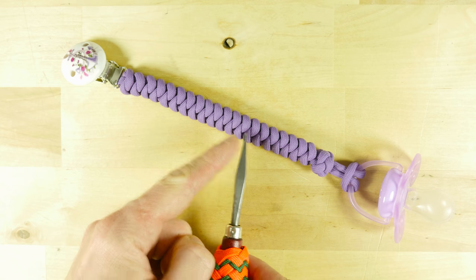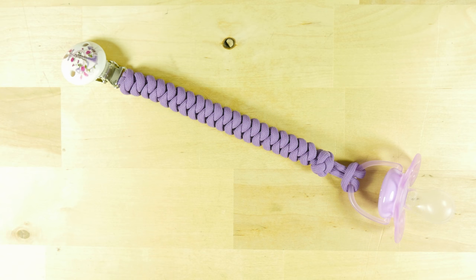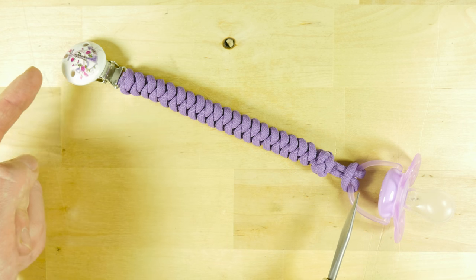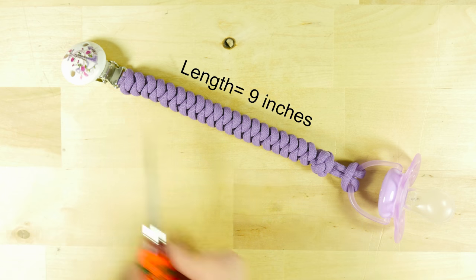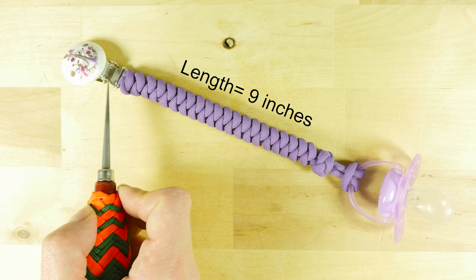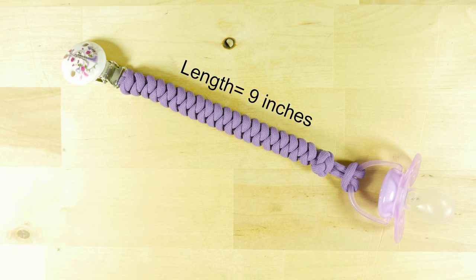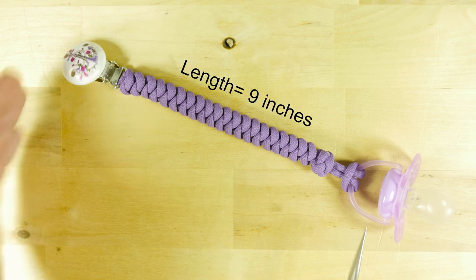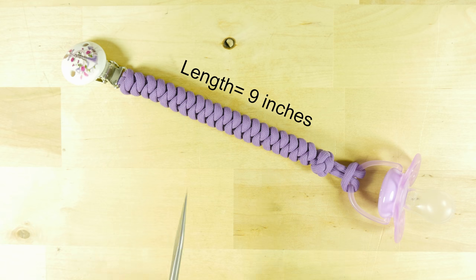If I briefly address the length of the pacifier holder, different holders come in different lengths. The shortest ones out there come out at about 6 inches or half a foot. Longer ones can reach up to a foot or 12 inches in length. The one that I'm going to be making is going to be a total of 9 inches. So 7.5 inches from loop up to the clip, and the clip itself adds another 1.5 inches.